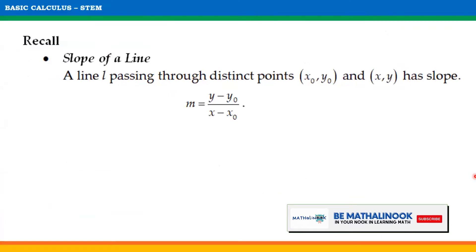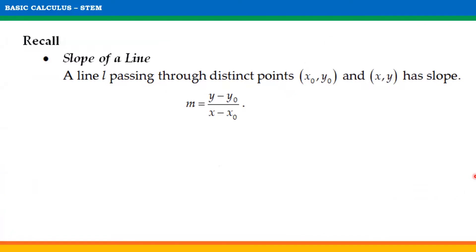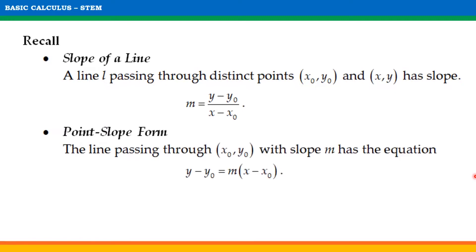To determine the equation of the tangent line, we need to recall the following concepts. For the slope of a line, a line L passing through distinct points with coordinates x sub 0, y sub 0 and x, y has a slope m equals y minus y sub 0 divided by x minus x sub 0. Point-slope form: the line passing through x sub 0, y sub 0 with slope m has the equation y minus y sub 0 equals m times the quantity x minus x sub 0. We will be needing these two formulas in solving or finding the equation of the tangent line.